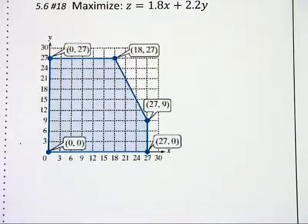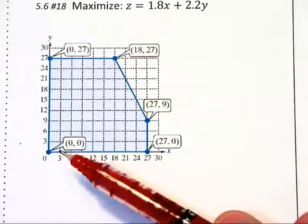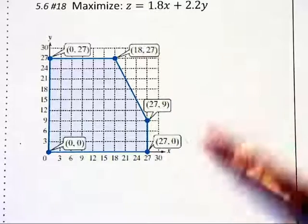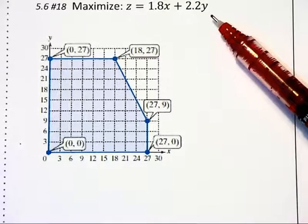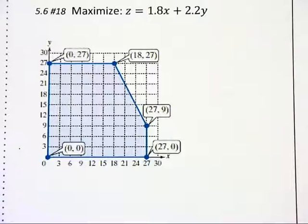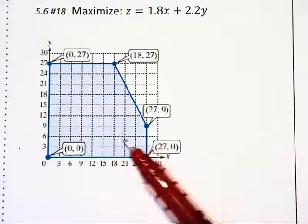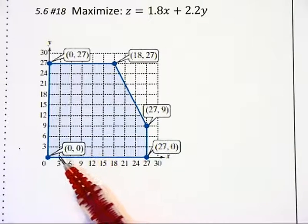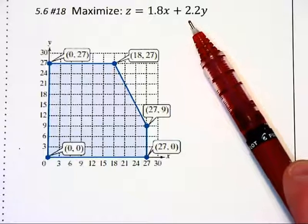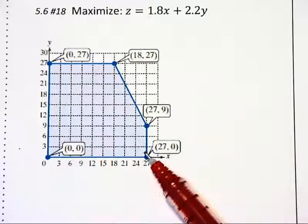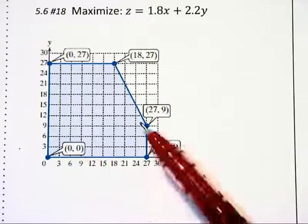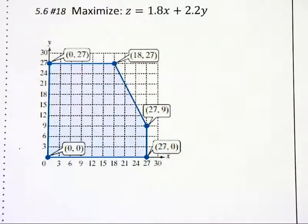They have already drawn out a feasibility region and they want us to substitute each of these points into this equation. Now it turns out that whenever you have a region representing a system of inequalities, whenever you go to maximize or minimize an equation subject to these constraints, the maximum or minimum will always occur at one of these vertices, which is kind of a high powered theorem that we're not going to prove here.